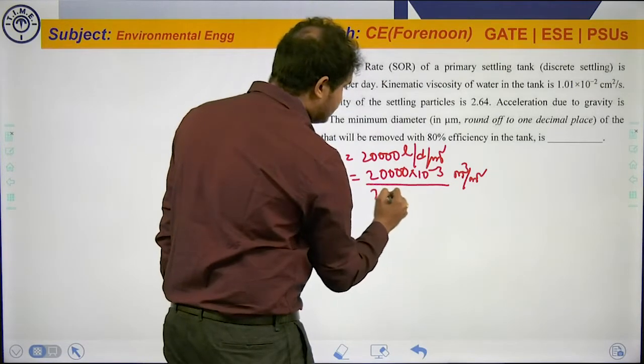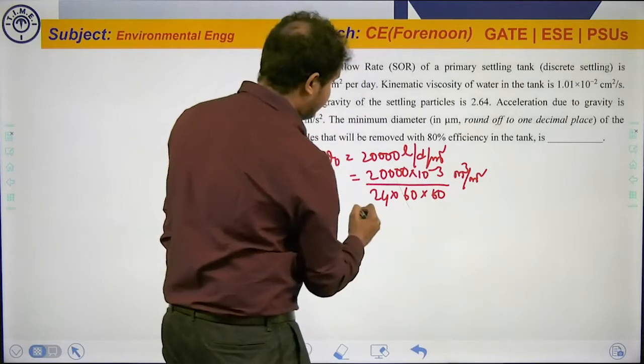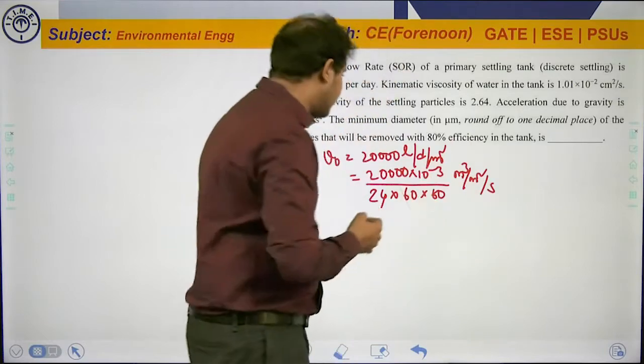It is one day equals 24 hours, one hour equals 60 minutes, one minute equals 60 seconds. That gives us V0 equals meter cube per meter square per second.